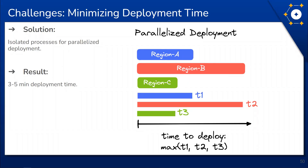For our solution, we implemented a parallel deployment strategy. We managed to isolate each regional deployment as a singular process, which is then executed in parallel. Because all regions start deployment at exactly the same time, the user will only have to wait for a limited amount of time before the test is run — the wait time becomes just as long as the slowest region takes to deploy. As such, a user will only have to wait around five minutes no matter how many regions they chose to involve in the test.